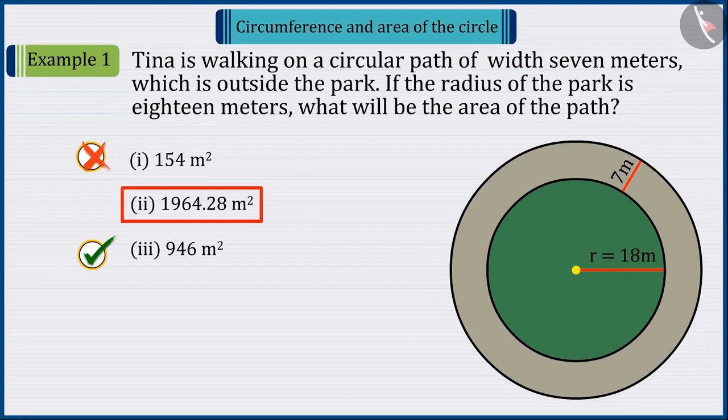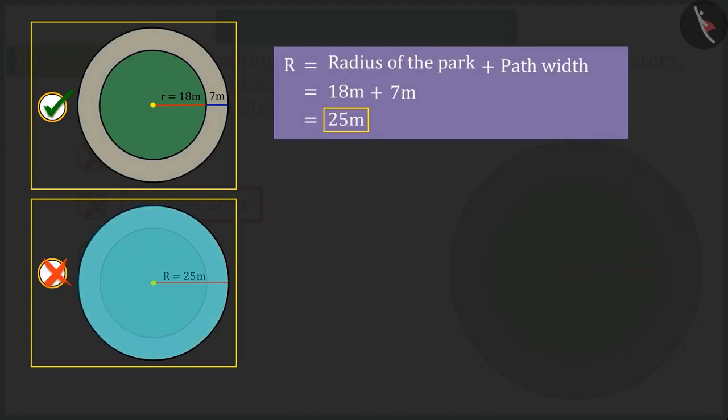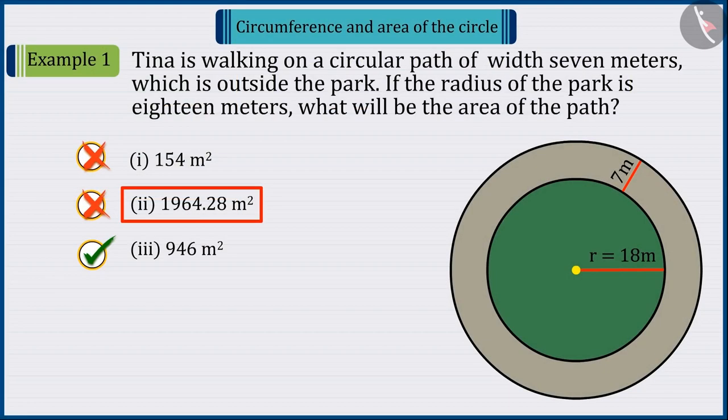If you have selected option 2, it was a good try. But, it was the wrong answer. Because here, you are not finding the area of the path. Rather, the area of the circle by the total radius of the park and the path. Which is why you get the wrong answer. Often children make such mistakes, where they are unable to find the radius or diameter of the circle and determine the wrong area. Let's look at another example.